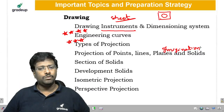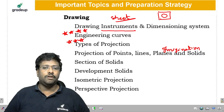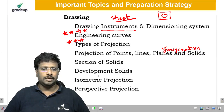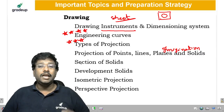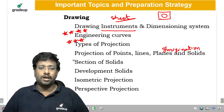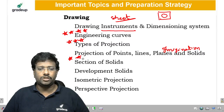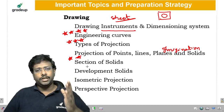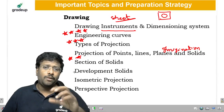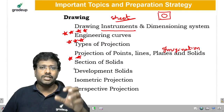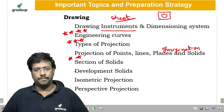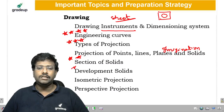Next is section of solids, which is used to reveal the inner features of an object. This is an important area. By sectioning a particular object, you need to determine what shape is obtained — for example, how many sides result when cutting a prism or pyramid.